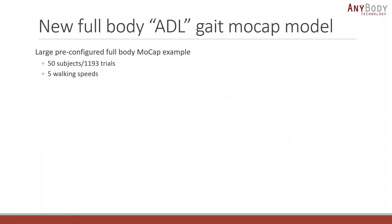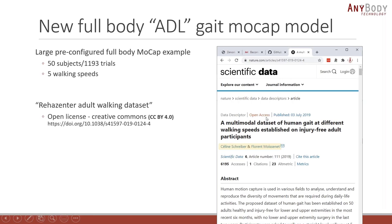The next thing is the new full body ADL gait mocap model, where ADL stands for activities of daily living. It's a large pre-configured full body mocap model. Previously, the mocap models in the repository were just examples of how to take your own data and create a larger model, but setting up these really large models requires a lot of work. So we took a free dataset with 50 subjects and 1,100 trials and created the full model for it. It's a really nice dataset published in Scientific Data by Celine Schreiber and Florent Moissenet, called the Reha Center Adult Walking Data Set, licensed under Creative Commons.